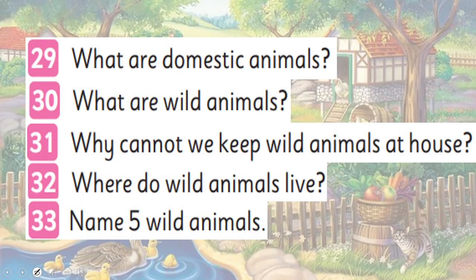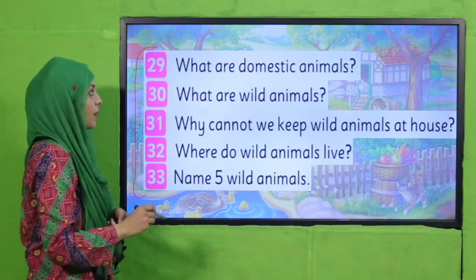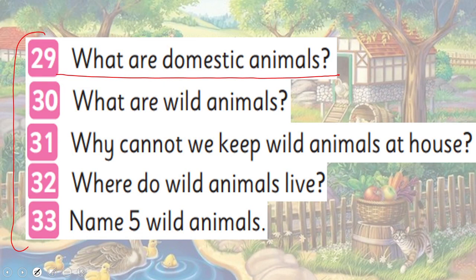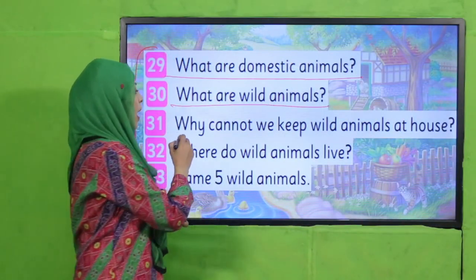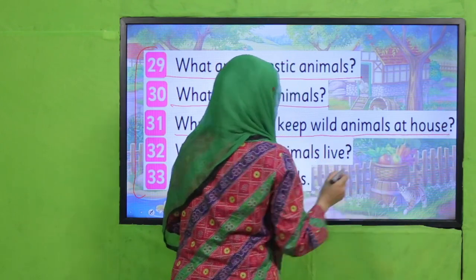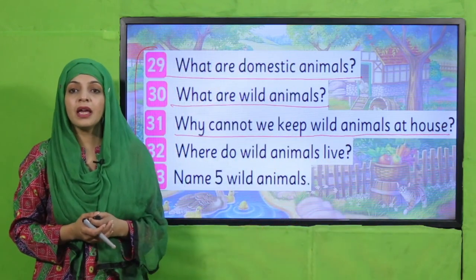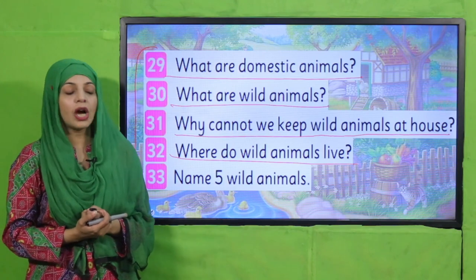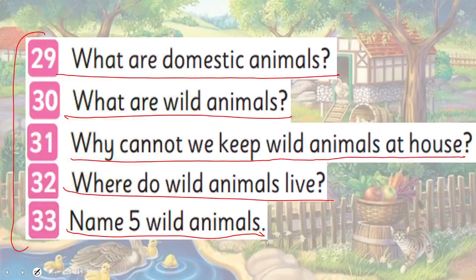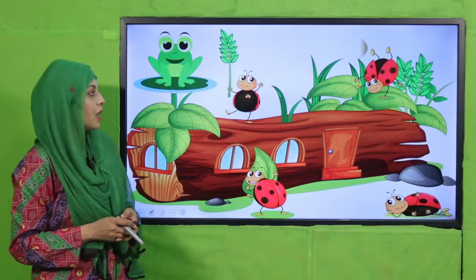Now is the time for evaluation. What are domestic animals? Domestic animals are those which we can keep in our house. What are wild animals? Wild animals are those animals which live in the jungle. Why can't we keep wild animals at home? Because they can be harmful to us. Name five wild animals: lion, monkey, tiger, elephant, hippo, and snake.